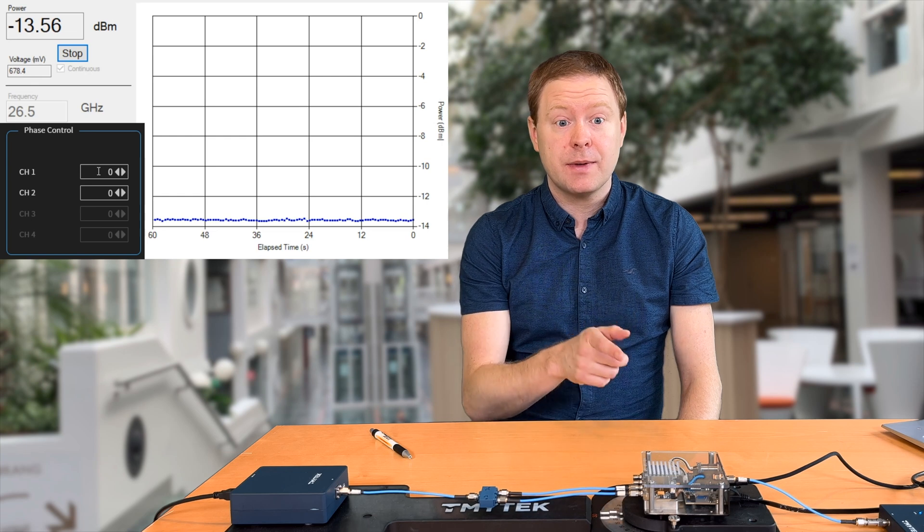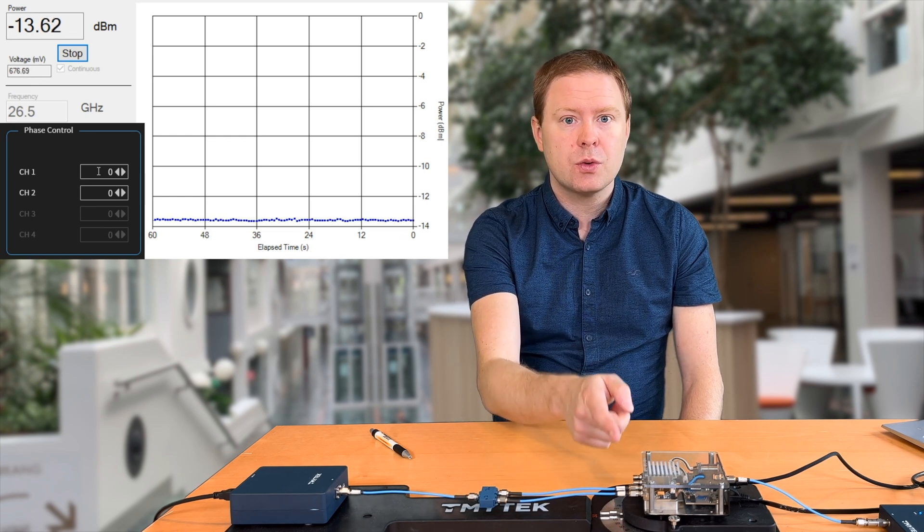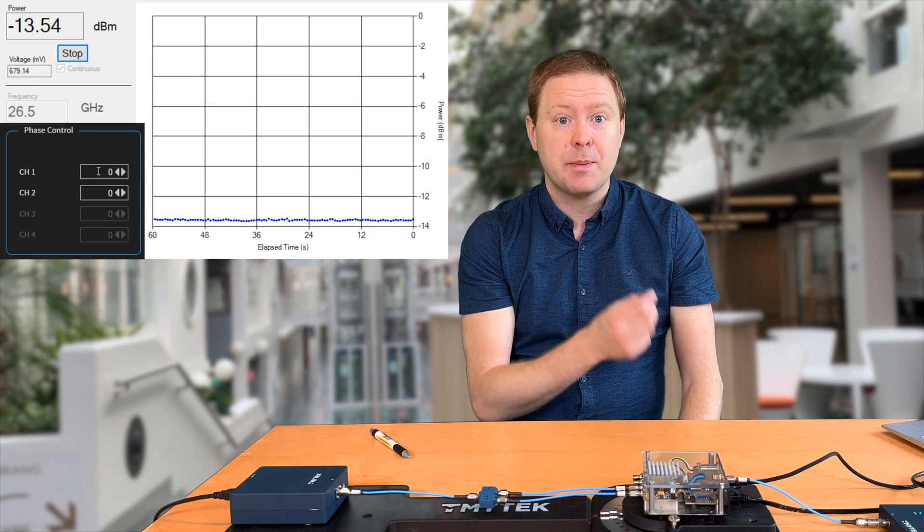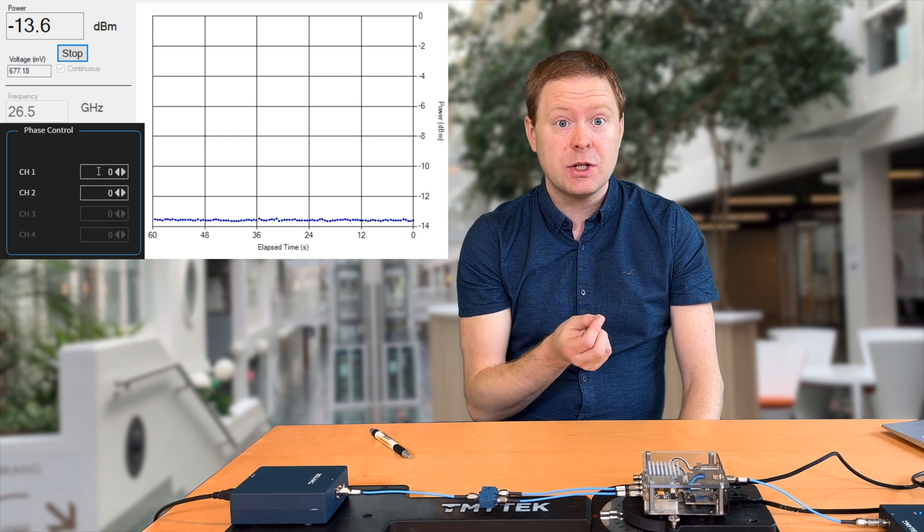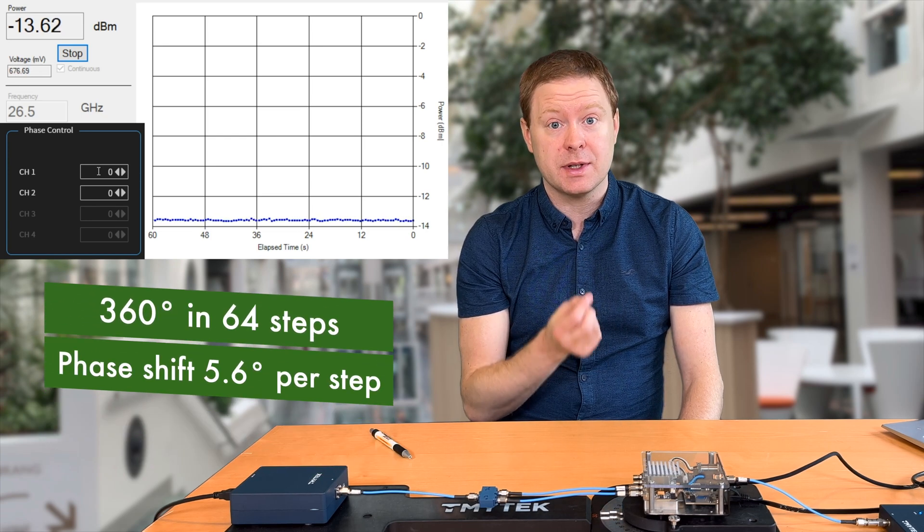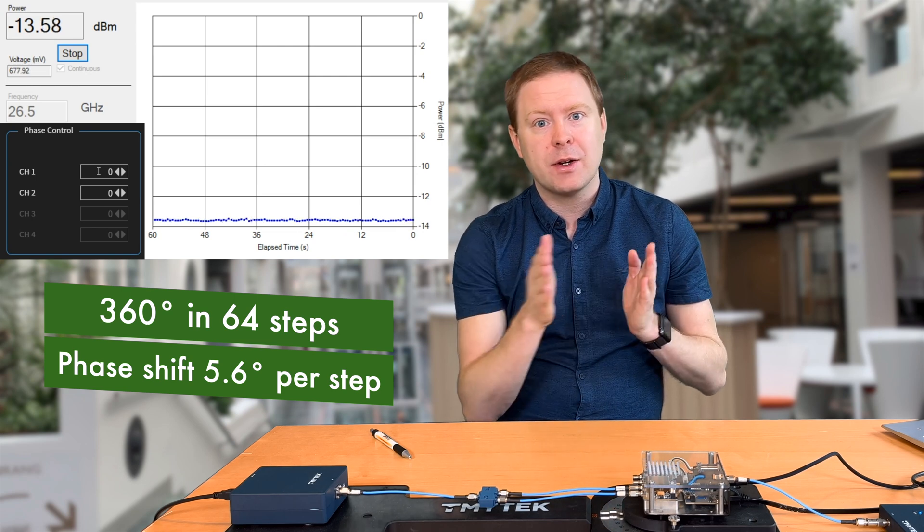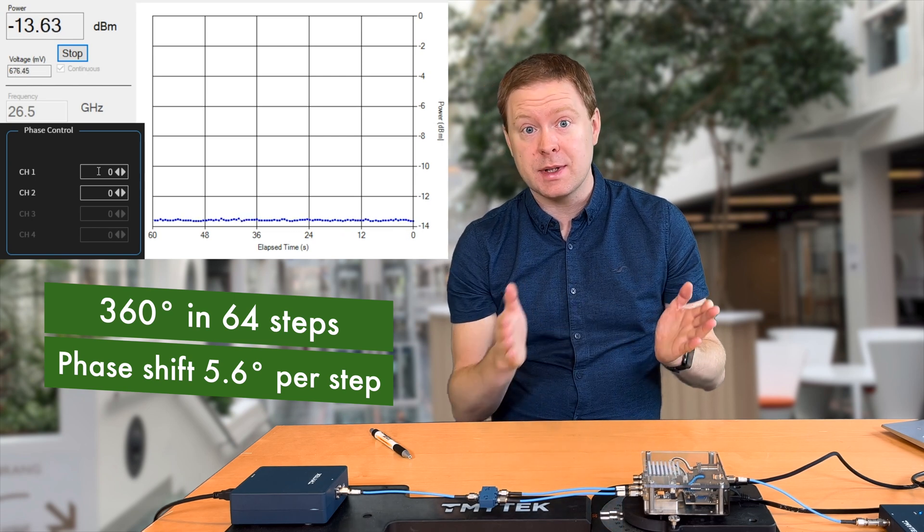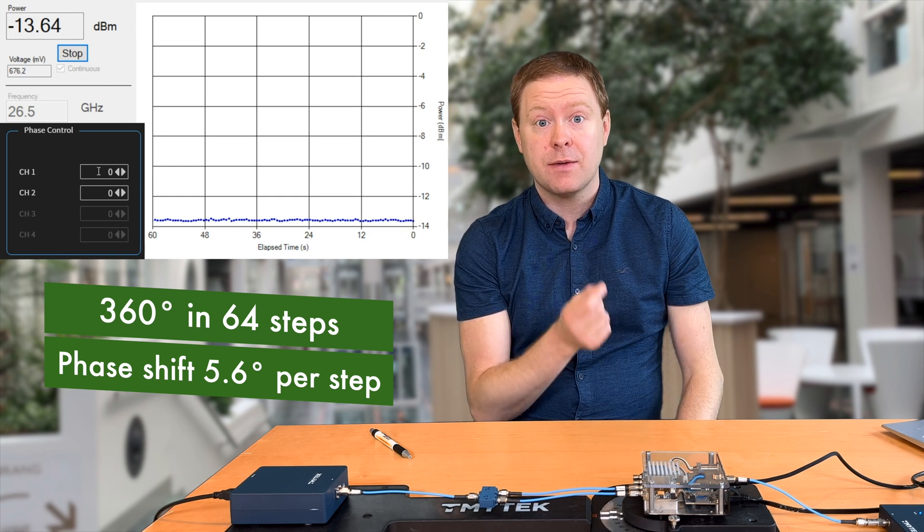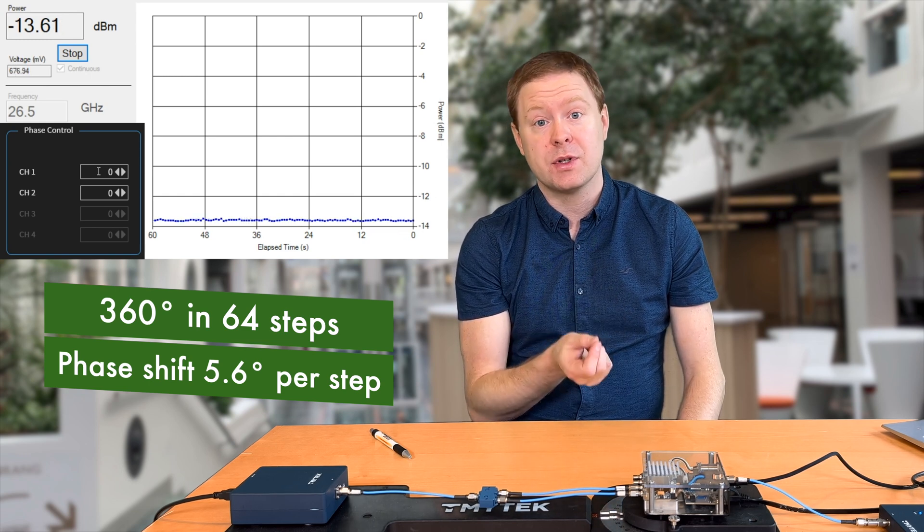This beamforming unit can shift the phase of the two transmitted signals independently from each other. The phase shifters have 64 different states. It can shift the signals all the way from 0 to 360 degrees, and with 64 steps, that means every step shifts the signal with 5.6 degrees.